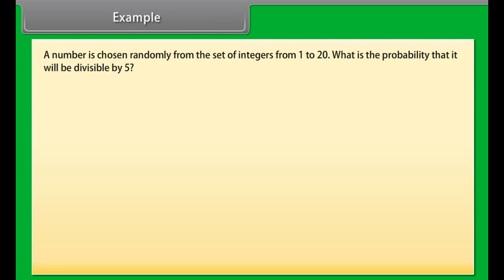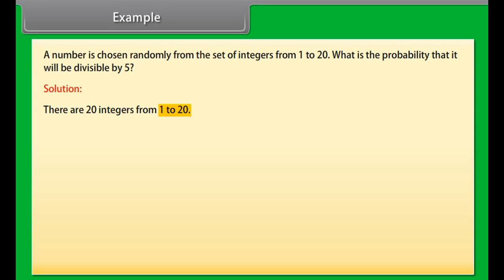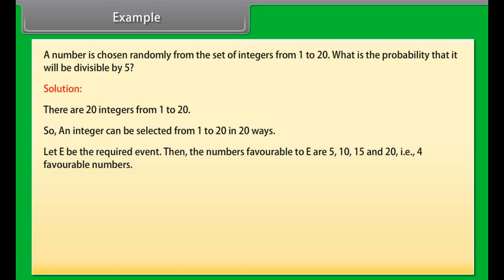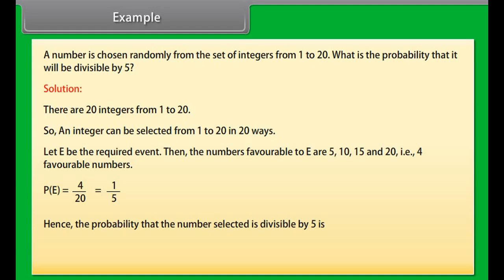Example: a number is chosen randomly from the set of integers from 1 to 20. What is the probability that it will be divisible by 5? Solution: there are 20 integers from 1 to 20, so an integer can be selected in 20 ways. Let E be the required event. The numbers favorable to E are 5, 10, 15, and 20 — that is, 4 favorable numbers. Therefore, P(E) equals 4 by 20, which equals 1 by 5.